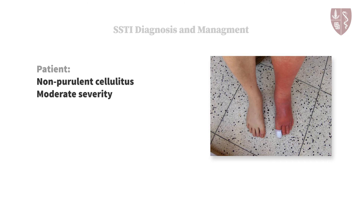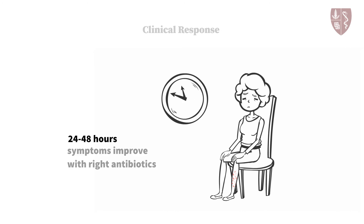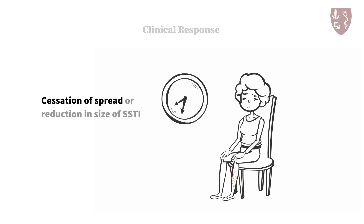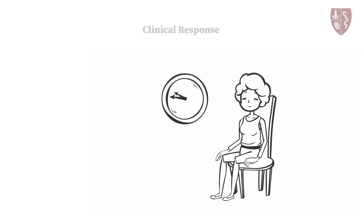The involved area of her leg has not changed significantly since admission, and she has received broad-spectrum antibiotics for almost 48 hours. Most patients treated with the right antibiotics begin to improve symptomatically by 24 to 48 hours after the initiation of therapy, but some do not see improvement for 72 hours. According to the FDA guidelines for SSTI studies, a clinical response is defined as the cessation of spread or reduction in size of the SSTI plus resolution of fever 48 to 72 hours after starting antibiotics. In this patient's case, she meets the general criteria for a positive clinical response.